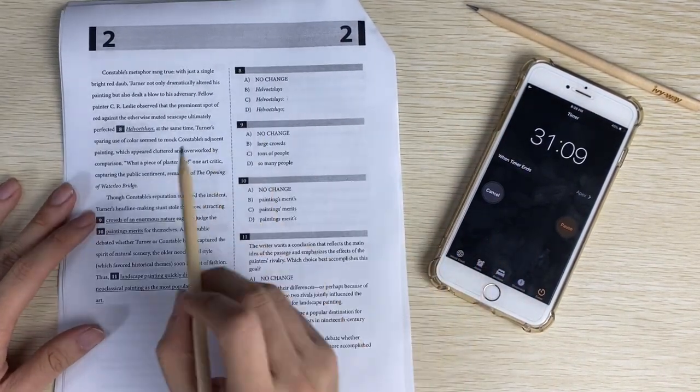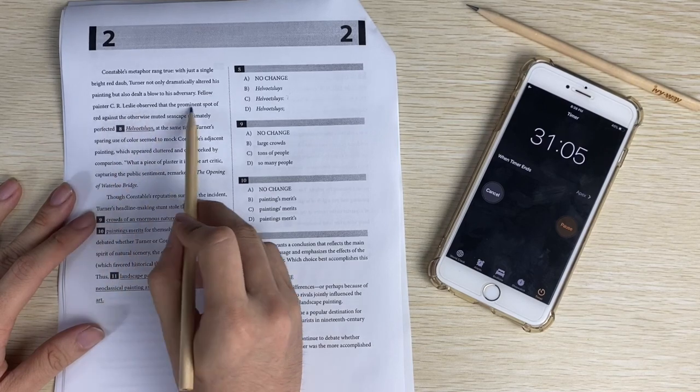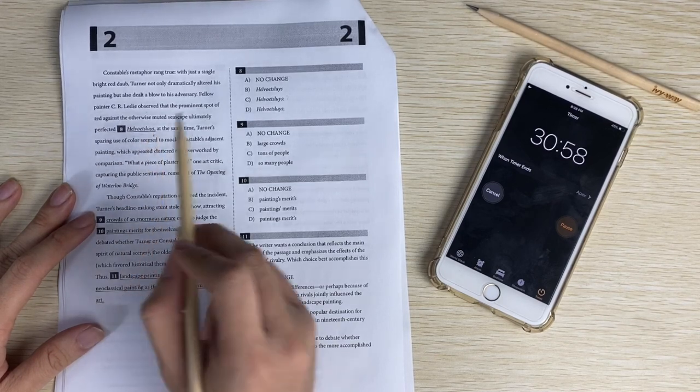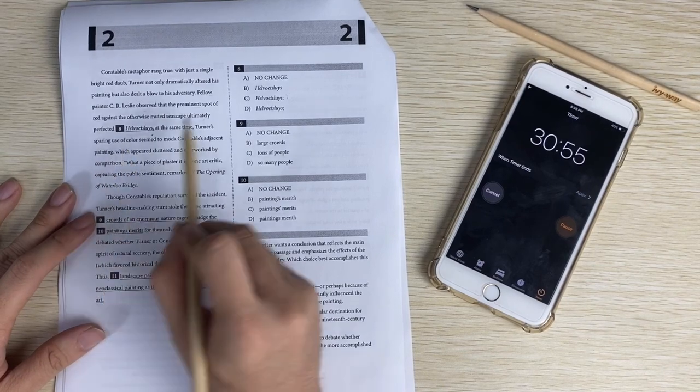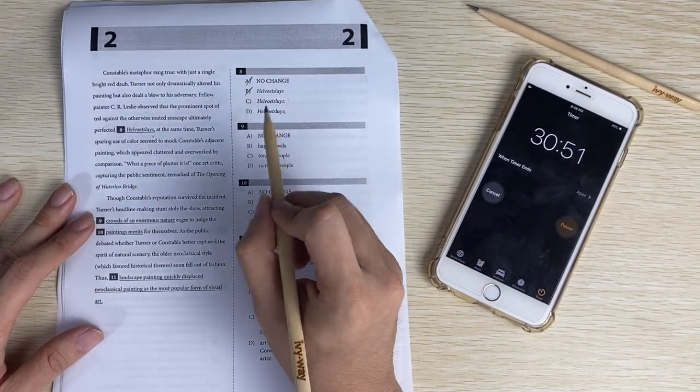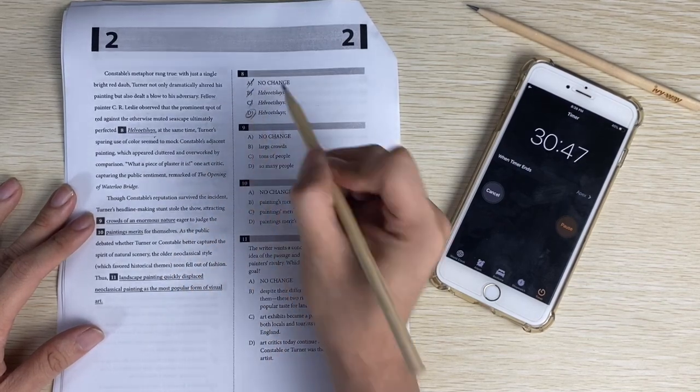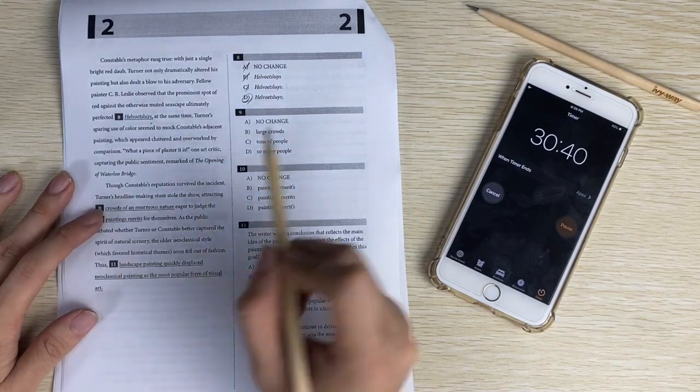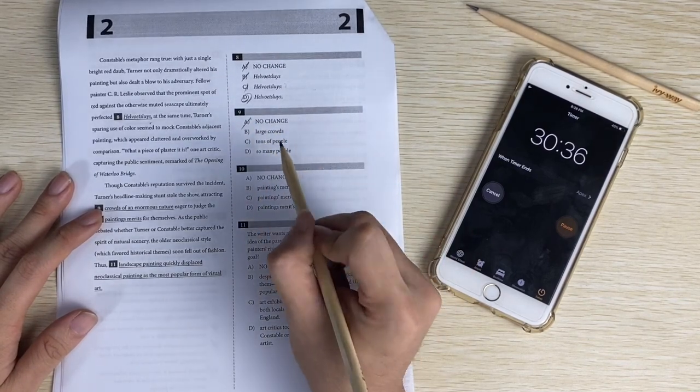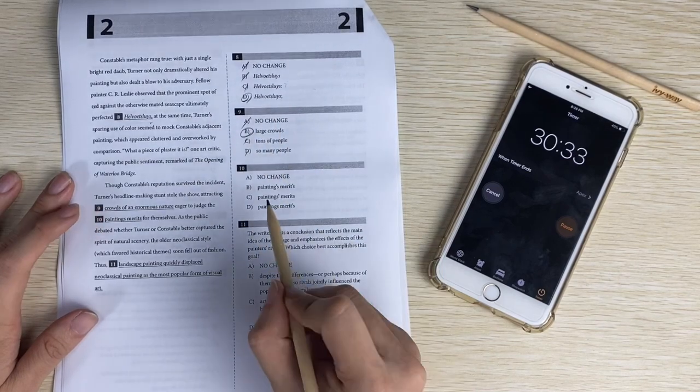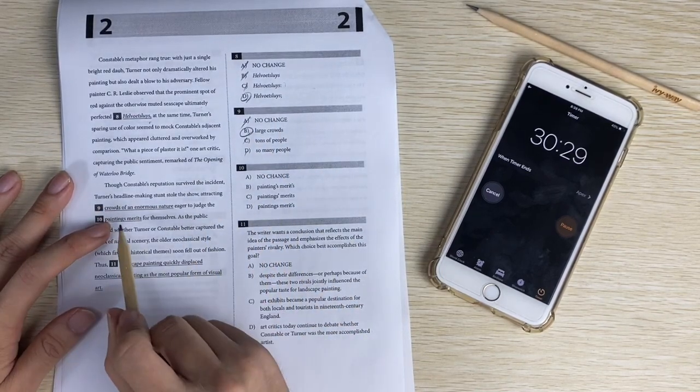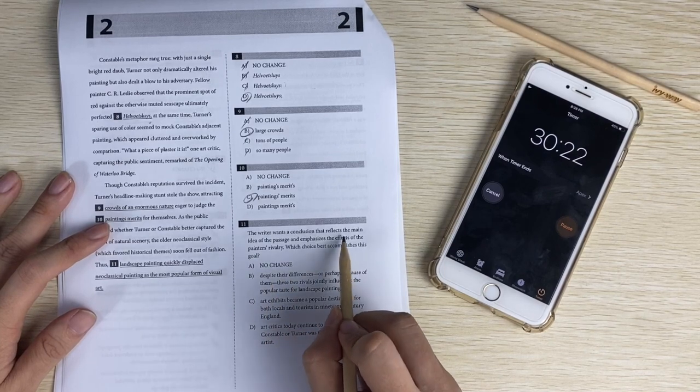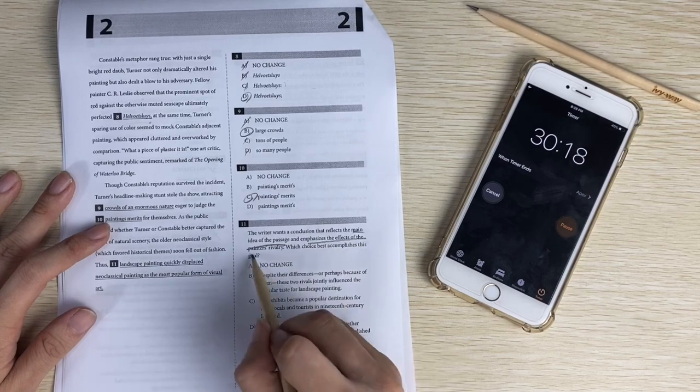And repeat information - does it repeat? It doesn't, so the answer is A. Now number eight, punctuation mark. So you look at the sentence. The painter observed this, perfectly this thing. And so at the same time, the use of two different sentences and B are run-ons. The second part is not an explanation, so the answer is D. Number nine tests you on colloquialism. Crowd of enormous nature is wordy. Large crowds is probably right. Tons of people, so many people are informal, so the answer is B. Number ten, paintings merits apostrophe. To judge the painting's merits, should be painting's merits.